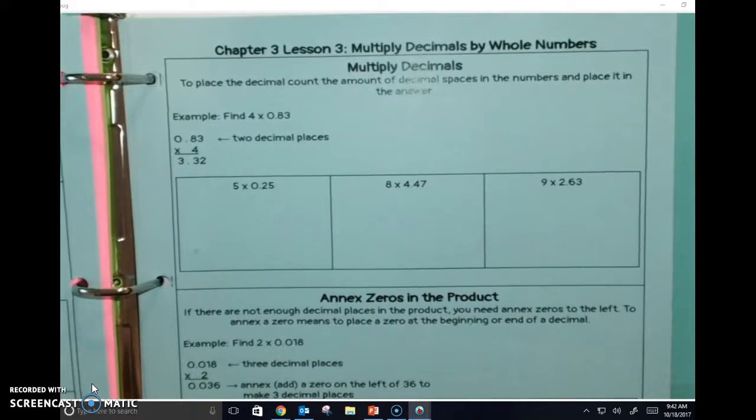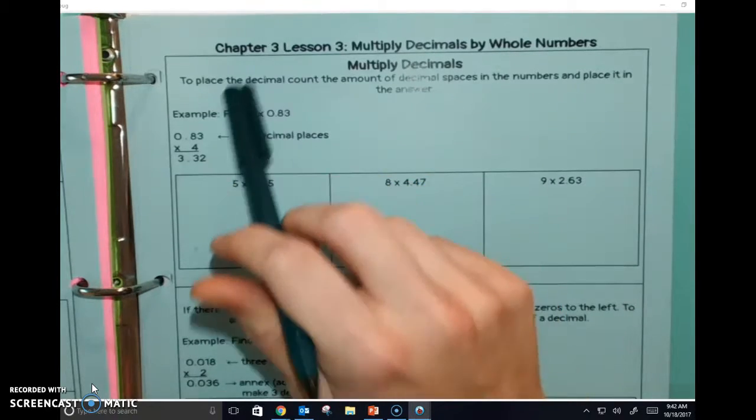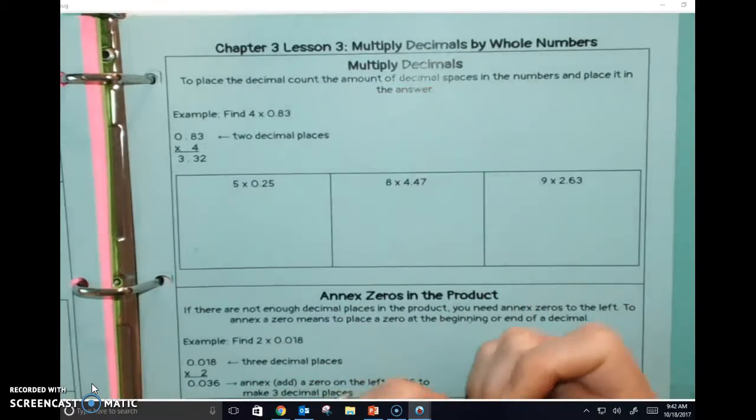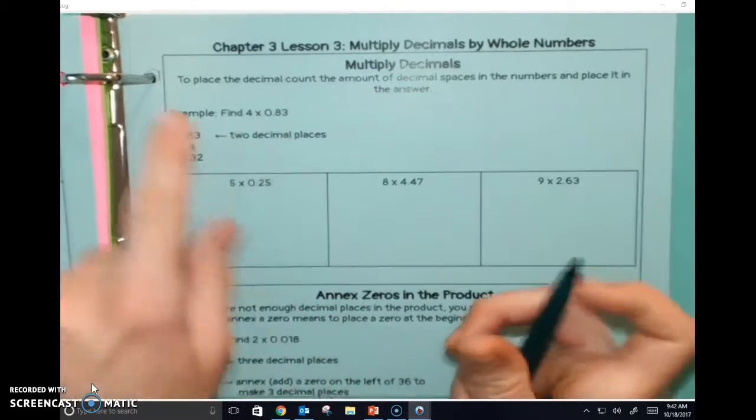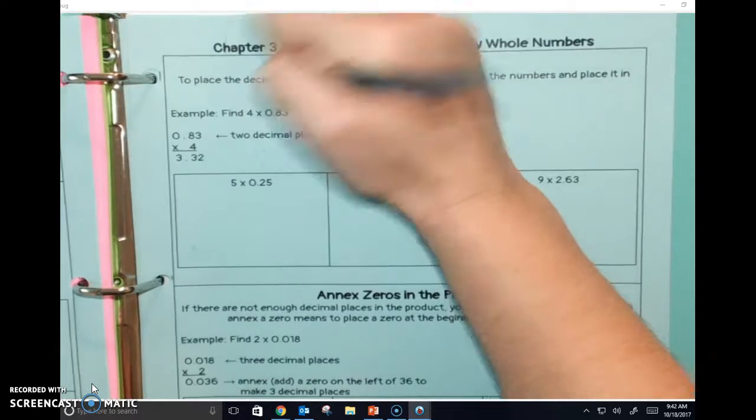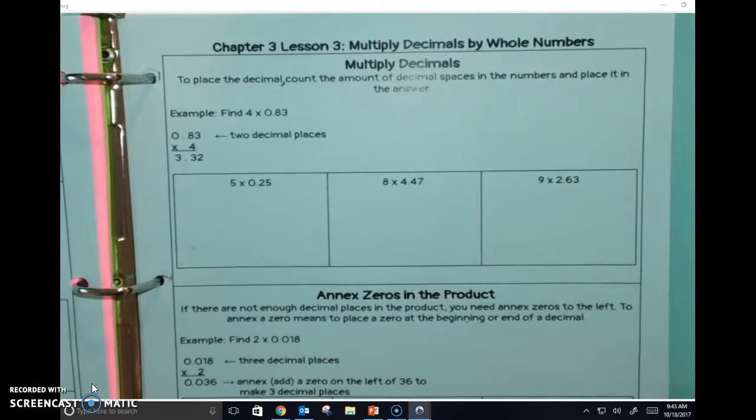Today we're going to review, because we did this last chapter, how to multiply decimals by whole numbers. If we look down here, it says multiply decimals. To place the decimal, count the amount of decimal spaces in the numbers and place it in the answer.